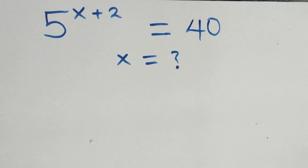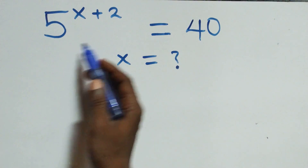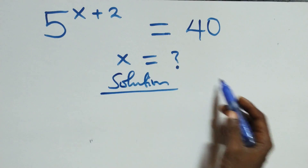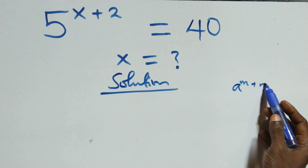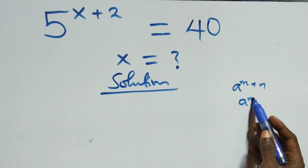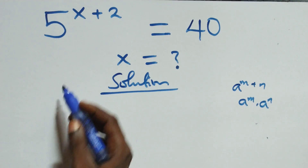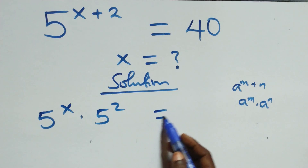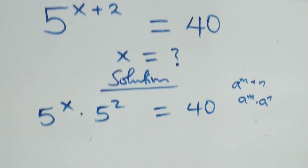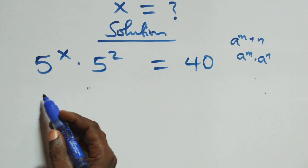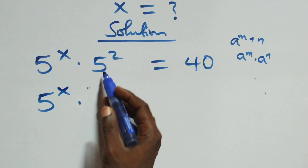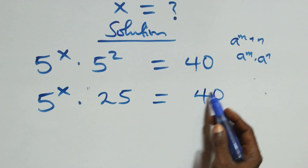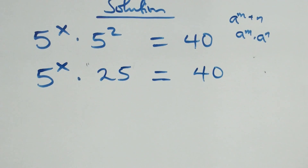Hello and welcome. Here's how to solve this exponential equation. We have a raised to power m plus n, which is the same as a raised to power m times a raised to power n. So this becomes 5 raised to power x times 5 squared equals 40. That is, 5 raised to power x times 5 squared — five times five — equals 40.